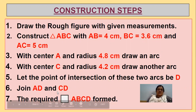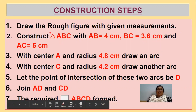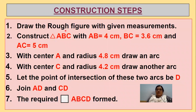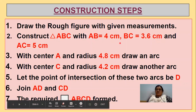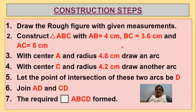Now, the construction steps for the second construction. Step 1: draw a rough figure with the given measurements. Step 2: construct triangle ABC with AB = 4 cm, BC = 3.6 cm, and AC = 5 cm. Step 3: with center A and radius 4.8 cm, draw an arc. Step 4: with center C and radius 4.2 cm, draw another arc. Let their intersection be D. Then join AD and CD to form quadrilateral ABCD.